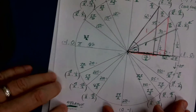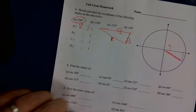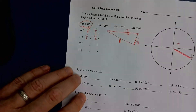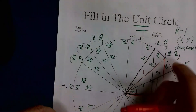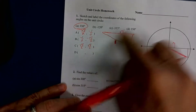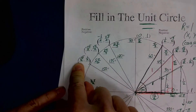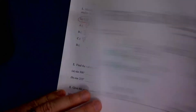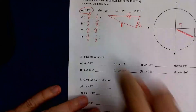B is negative 120 degrees, which is the same as 240 degrees, giving negative 1 half and negative root 3 over 2. C is negative 315 degrees, the same as 45 degrees — that's root 2 over 2 for both x and y. And d is 150 degrees, which is 5 of these 30-degree angles. That takes me to a reference angle of 30-60-90, so it's root 3 over 2 and 1 half.